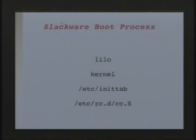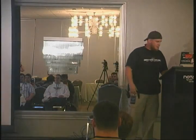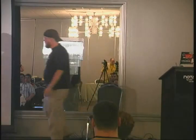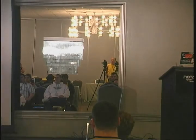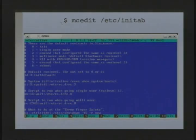The Slackware boot process: first it goes to LILO, which points to what version of the kernel or what you want to boot. If you want to boot Windows you can set that up and it'll go to your Windows partition. Then it moves on to your kernel, which is Linux. The kernel goes to /etc/inittab, which you can open — it's a plain text file. You can change your run level: three is multi-user mode, but if you want it to go straight to X (your GUI), you change it to four.